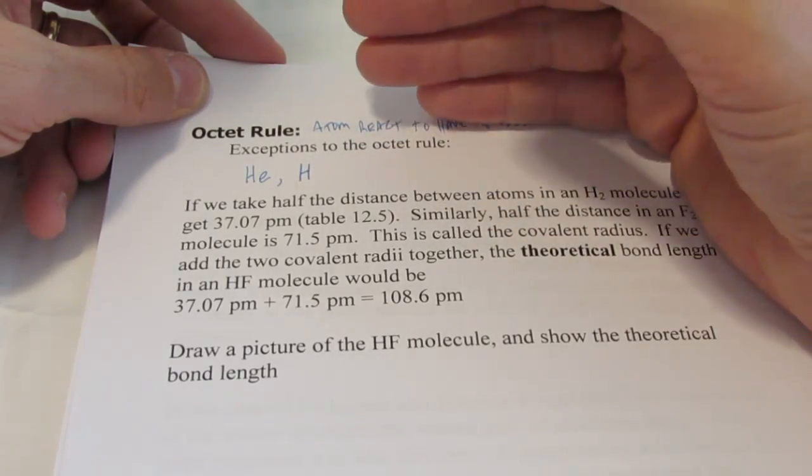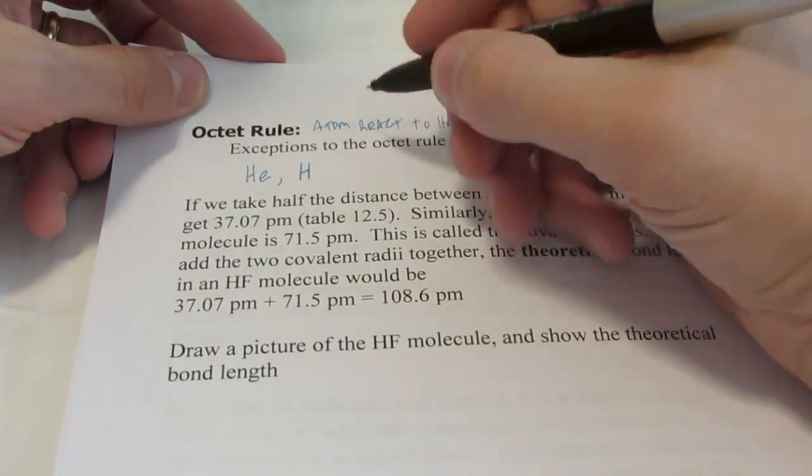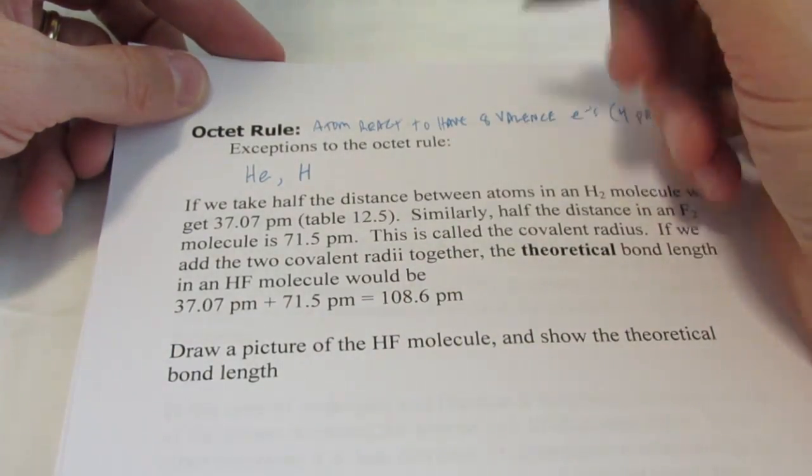There are some other exceptions to the octet rule, and we'll take a look at those later. But for right now, the only two you have to worry about will be helium and hydrogen. They are stable with a full outer level. Since they only have one energy level, they would be stable with a pair of electrons.